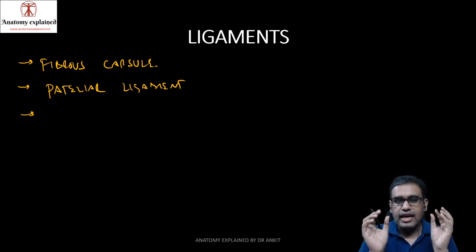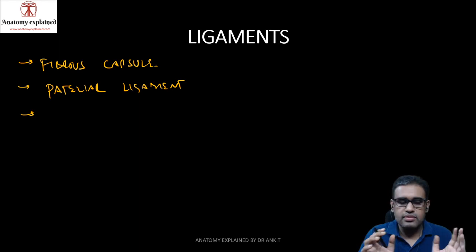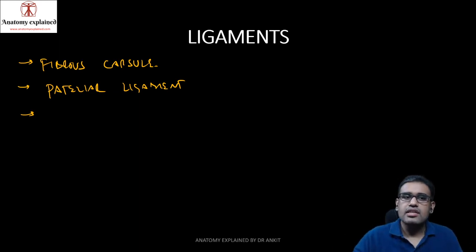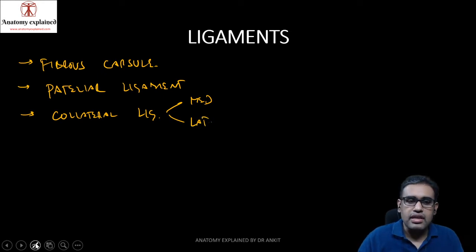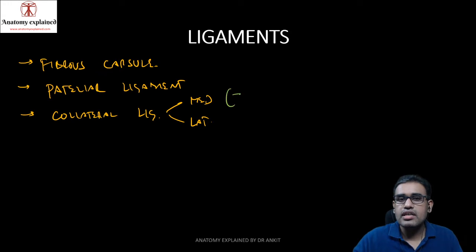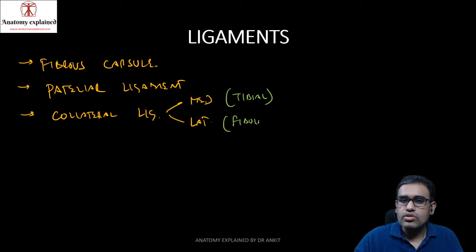Because it is basically a hinge joint, the capsule is thicker on both sides — medially and laterally — and these are the collateral ligaments. The medial collateral ligament is also known as the tibial collateral ligament, and the lateral collateral ligament is known as the fibular collateral ligament.